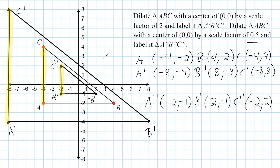One final note: the strategy of writing the original coordinates and multiplying by the scale factor only works if your center of dilation is the origin, or zero, zero. So when performing dilations where the center of dilation is the origin, you can simply write down the original coordinates and multiply each value by the given scale factor.